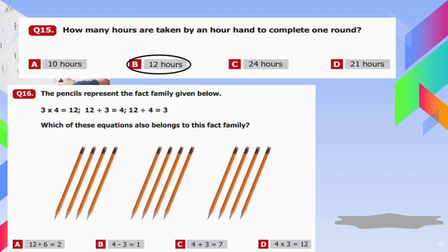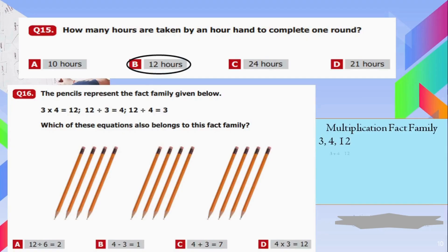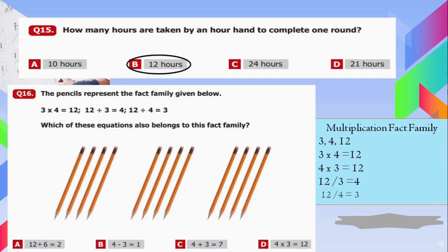Question number sixteen: The pencils represent a fact family. There are two types of fact families: addition/subtraction and multiplication/division. Here multiplication and division are included. A fact family always has three numbers used to make four equations. Three equations are present, but the fourth — 12 multiplied by 3 equals 12 — is missing. D is our correct answer.